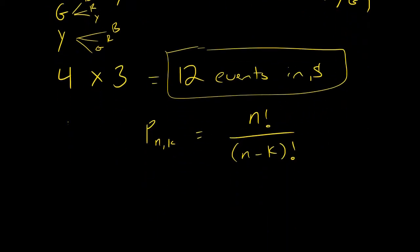How would we use it? We'd say, okay, well, there are four total balls. So n is four, we are selecting two of them. So k is two. So I would have P 4,2. So four factorial divided by four minus two factorial.